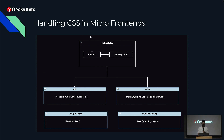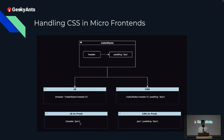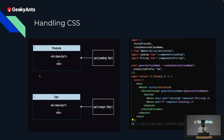There is a CSS issue you may face when using CSS-in-JS libraries like Material UI's makeStyles. When you give a component a class name like 'makeStyles-header-2' in the JS file, it creates a corresponding CSS rule with that name. However, during production bundling, Webpack minimizes class names to jss1, jss2, jss3 to reduce bundle size.